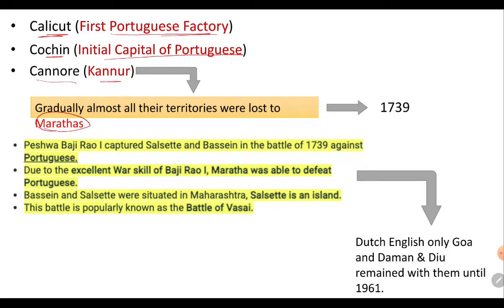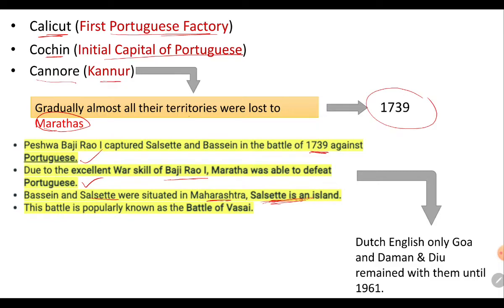Gradually, almost all Portuguese territories were lost to the Marathas. In 1739, Peshwa Bajirao I captured Salcette and Bassein in battle against the Portuguese, due to the excellent war skills of Bajirao I. Bassein and Salcette were situated in Maharashtra. This battle is popularly known as the Battle of Vasai. After this, only Goa, Daman, and Diu remained with the Portuguese until 1961.